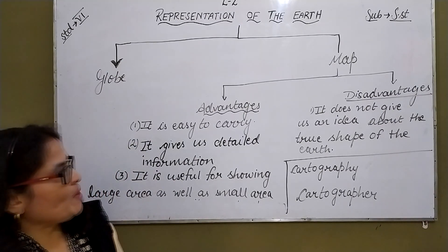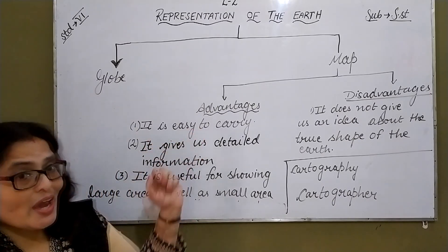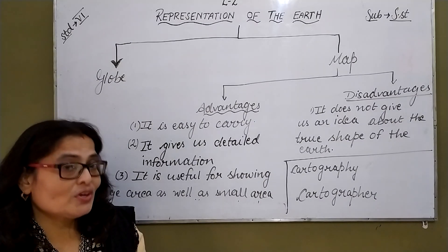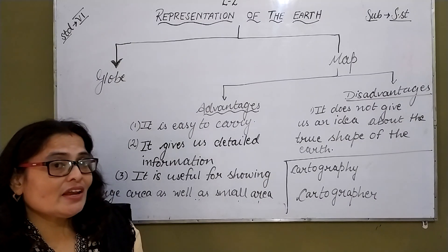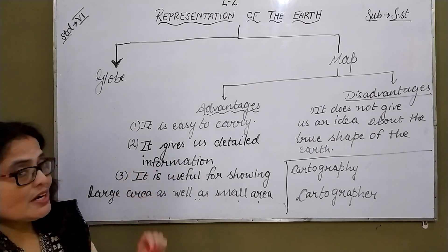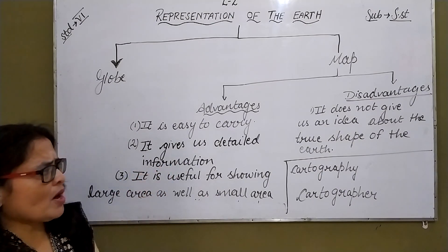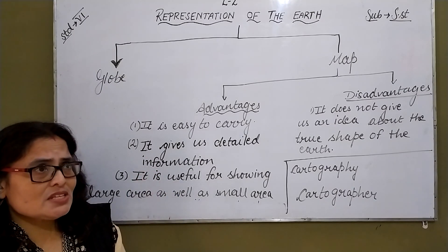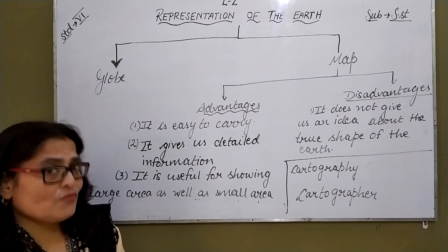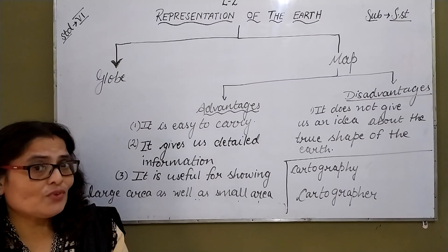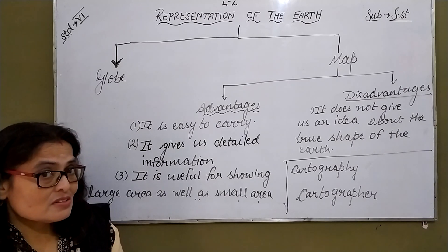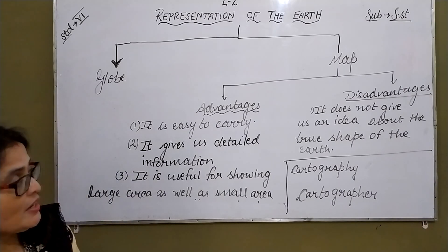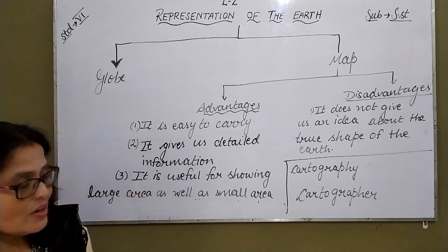Now, the advantages of a map. A map is very easy to carry because you can fold it, roll it, and you can keep it in your notebook — you can easily carry it around. It also gives us detailed information. Very minute detail can be shown on a map. We can see hills, distribution of forest, distribution of rainfall, population, rivers on the map. So, a map gives us very detailed information.